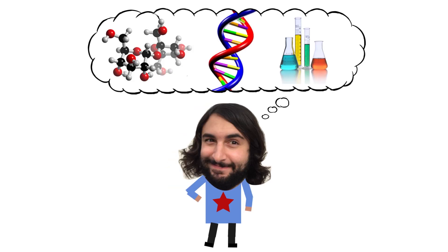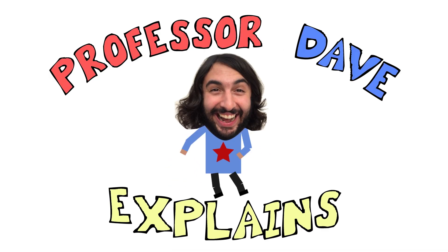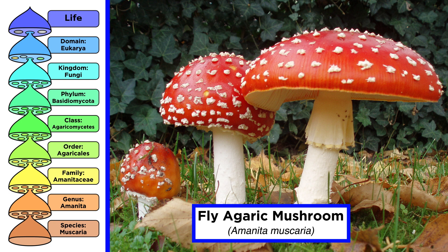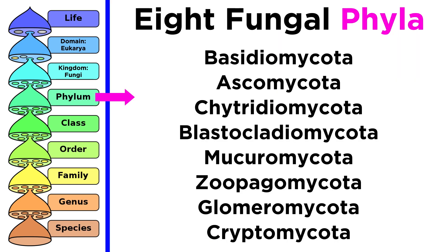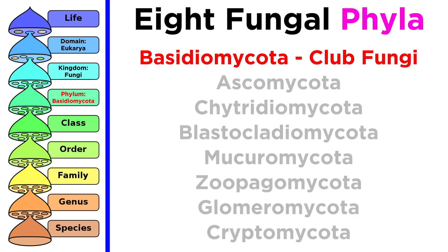Professor Dave Explains. In the previous tutorial, we outlined the taxonomy of a single basidiomycete, the fly agaric. Starting from the domain classification and using binomial nomenclature, we learned that this mushroom's scientific name is Amanita muscaria. With this understanding of taxonomy, we can now expand our range of fungi beyond the individual species and peer into the diversity that each fungal phylum holds. Let's begin by discussing the different fungi that fall within the phylum Basidiomycota, commonly known as the club fungi.